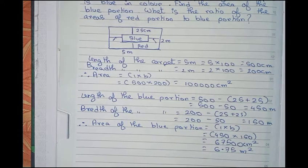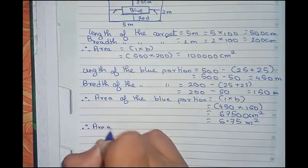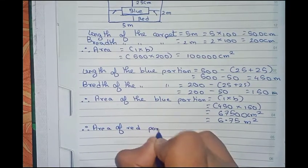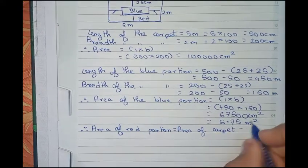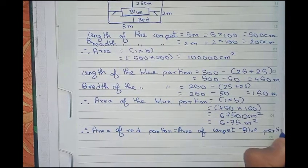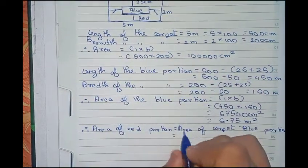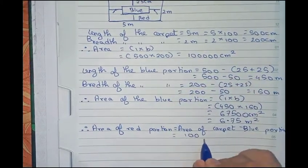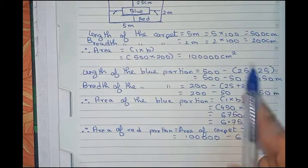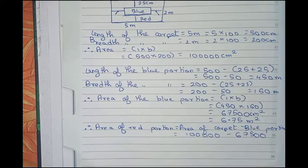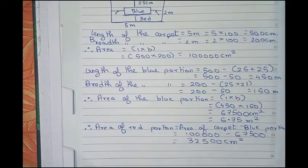Now we find the ratio of the areas of the red portion to the blue portion. First we find the area of the red portion. Area of red portion equals area of carpet minus area of blue portion. The area of the full carpet is 1,00,000 centimeter square minus the blue portion area 67,500 centimeter square, that equals 32,500 centimeter square. So this is the area of the red portion.